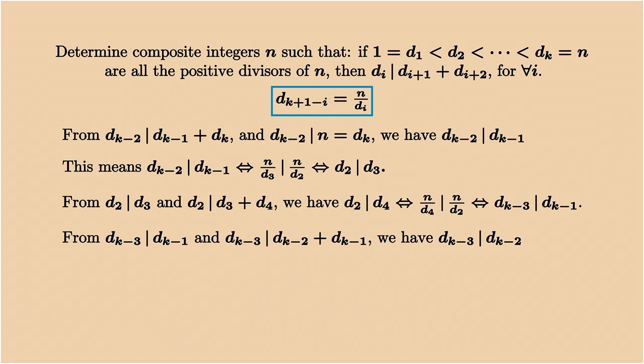So now you can see this is a simple induction argument. We can look at the backward, get something from the forward. By looking at the forward, get something from the backward. And at the end of the day, we will get d1 divides d2, d2 divides d3, d3 divides d4, until dk minus 1 divides dk.